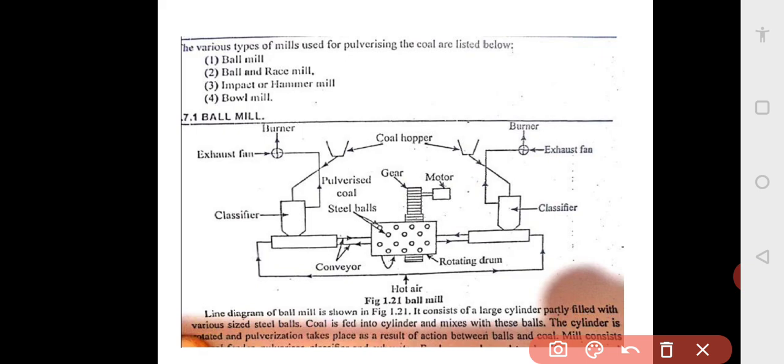The diagram shows it consists of a large cylinder partly filled with various sized steel balls. Coal is fed into the cylinder which mixes with the balls. The cylinder is rotated and pulverization takes place as a result of action between the balls and coal. The mill consists of coal feeder, pulverizer, classifier, and exhaustor.